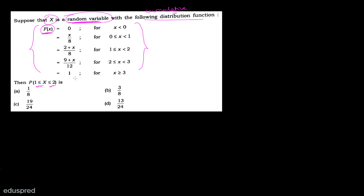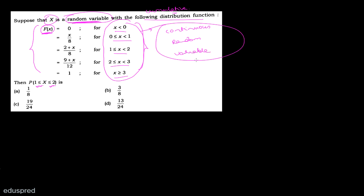Now I will explain the typical student thought process. Students generally see that the information is provided in interval form in the CDF, and because of that, many students conclude that x is a continuous random variable. If it is a continuous random variable, then the probability P(1 ≤ x ≤ 2) would be computed as F(2) minus F(1).